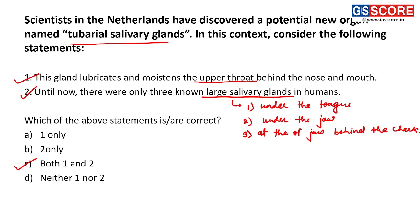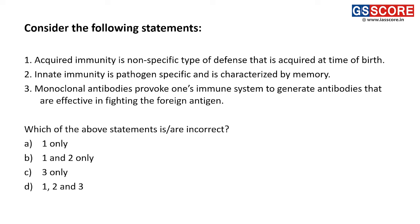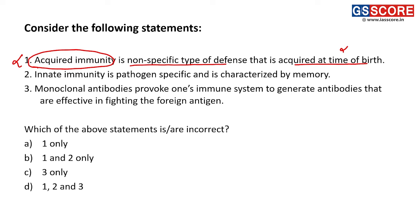Next question: consider the following statements. First — acquired immunity is a non-specific type of defense that is acquired at the time of birth. This is an incorrect statement because acquired immunity is not present at birth — it is acquired through life. It is specific to the virus or pathogen that caused a certain disease, not non-specific. First statement is incorrect.